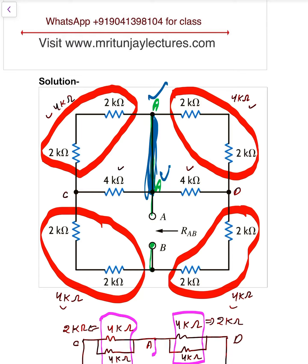These two resistors are in series combination, giving 4 kilo ohm. Similarly, 2 kilo ohm and 2 kilo ohm here are in series giving 4 kilo ohm. Likewise, 2 kilo ohm and 2 kilo ohm here are in series giving 4 kilo ohm, and another pair of 2 kilo ohm and 2 kilo ohm in series gives 4 kilo ohm.